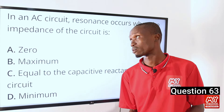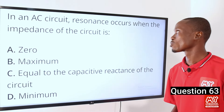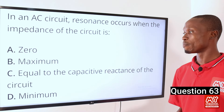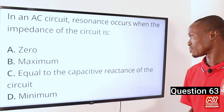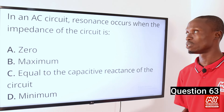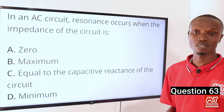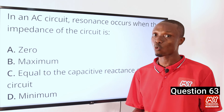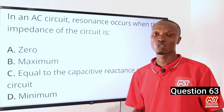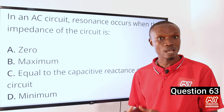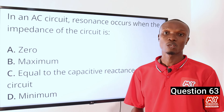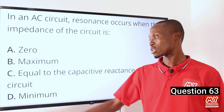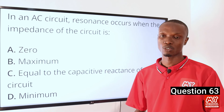Question 63. In an AC circuit, resonance occurs when the impedance of the circuit is: A, zero; B, maximum; C, equal to the capacitive reactance; D, minimum. In an AC circuit, resonance occurs when the inductive reactance equals the capacitive reactance. At this point the capacitive reactance cancels out the inductive reactance, so the impedance of the circuit is minimum. That makes option D the correct option.